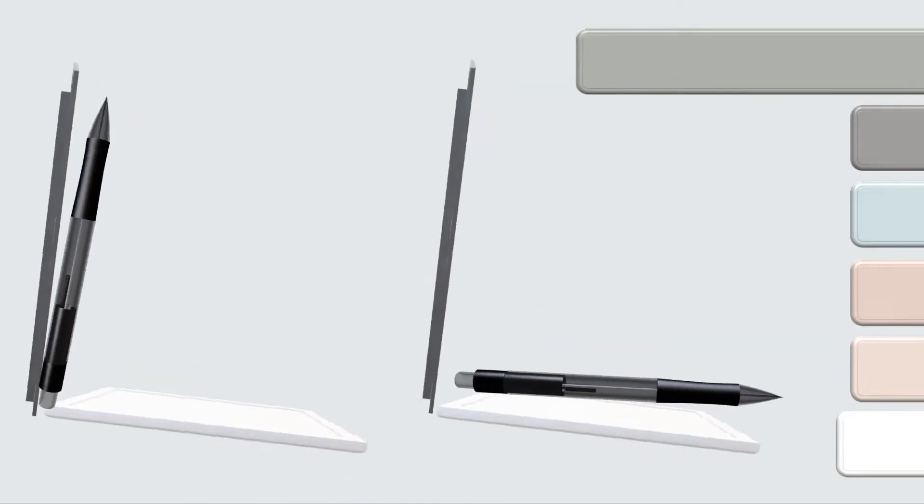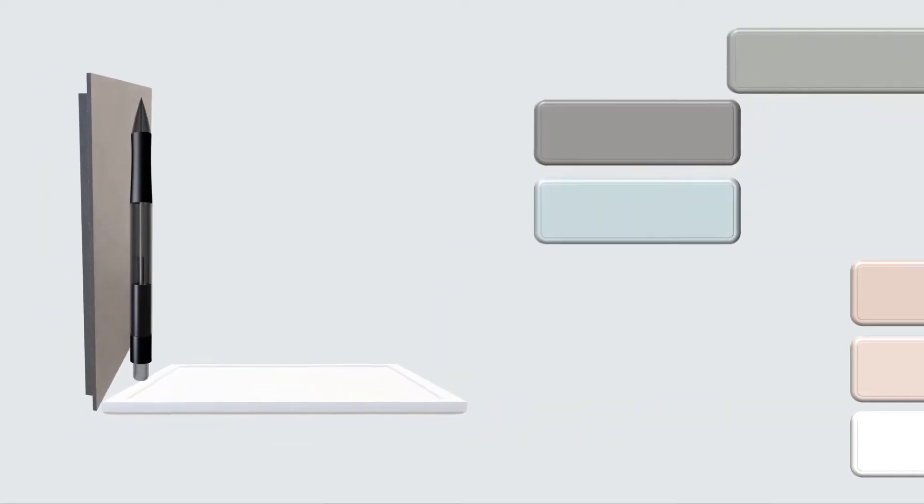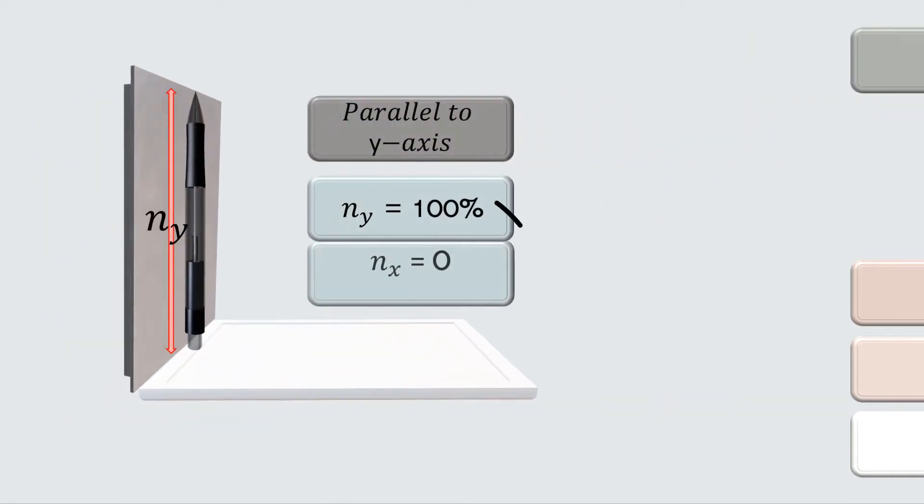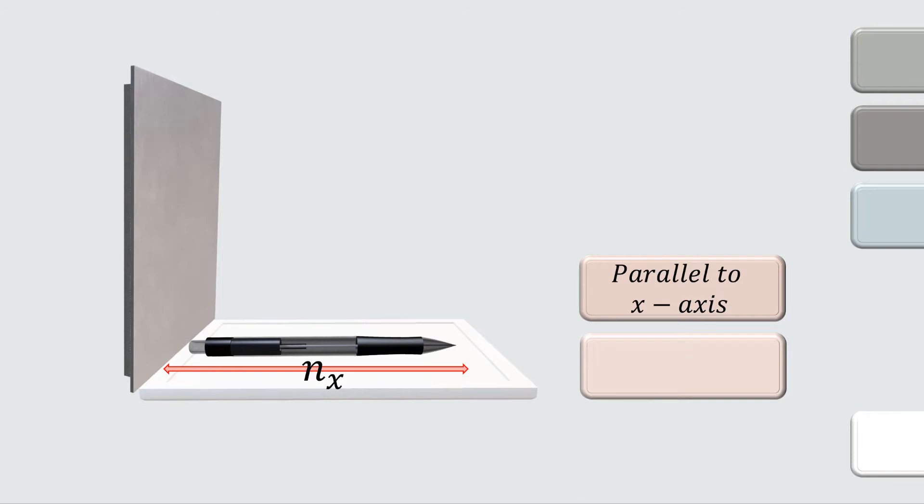Next, how should we calculate if the vector is parallel to one of the axes, like in these figures? Well, if the vector is parallel to the y axis, the n_y will get 100% of the magnitude of the vector, while n_x equals to 0. And if the vector is parallel to the x axis, then the n_x will get 100% of the magnitude, while n_y equals to 0.